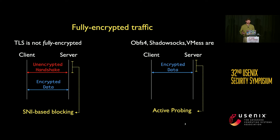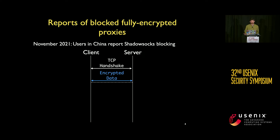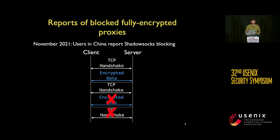While fully encrypted protocols have been vulnerable in the past to attacks such as active probing, you can't simply start filtering packets arbitrarily. However, in November 2021, users in China began to report Shadowsocks being blocked. Some connections got through with no trouble, while other connections would get blocked shortly after data packets started being sent. Once a connection experienced blocking, any follow-up connections to the same three-tuple would experience blocking on the TCP handshake.